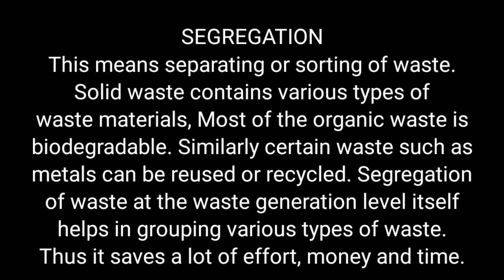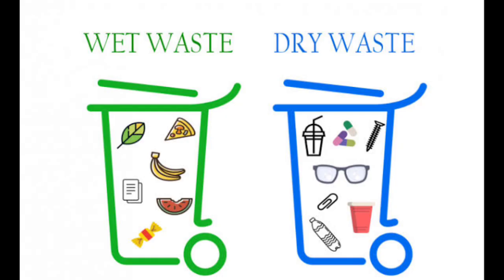Segregation of waste at the waste generation level itself helps in grouping the various types of waste, thus saving a lot of effort, money, and time. This process can be followed from the home itself. For example, in the kitchen we can keep separate dustbins for wet waste and dry waste — wet waste means organic, dry waste means inorganic.